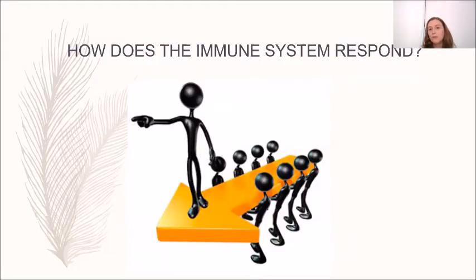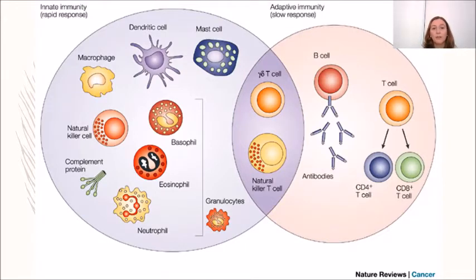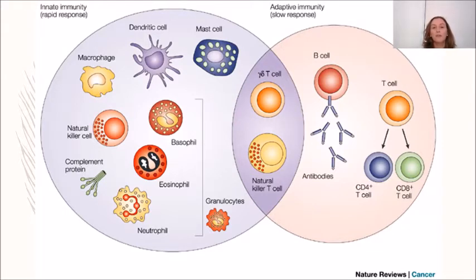The immune system has two types of immunity. The innate immunity is a rapid response — it is the first response to any antigen — and it is composed of several cellular elements such as macrophages and dendritic cells. Dendritic cells will be very important, and we will be talking about them later.